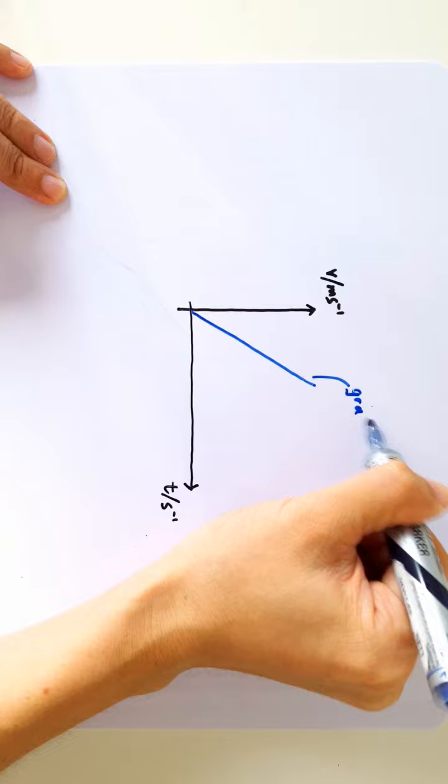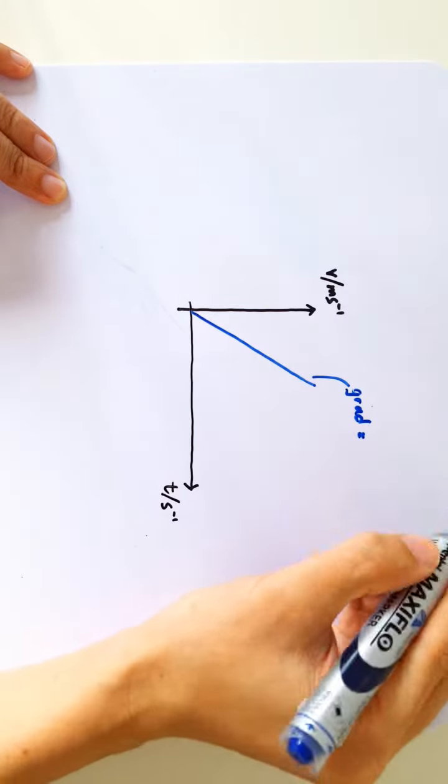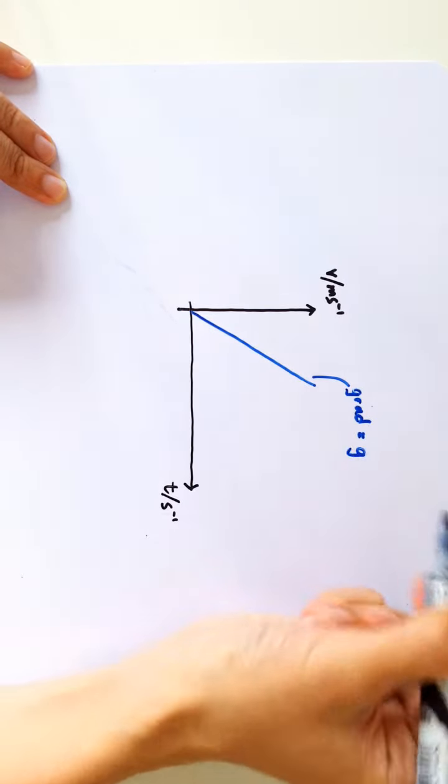And the gradient should be equal to the acceleration of free fall, or the gravitational field strength.